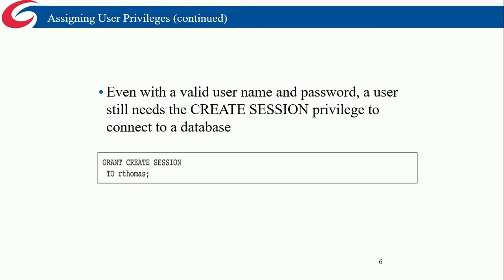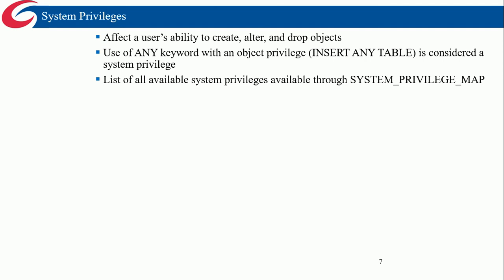Even with a valid username and password, you still need the CREATE SESSION privilege to connect to the database. This is a common mistake students make — they create the user account but can't log in. That's because you need permission to create a session. Creating a user account is really a two-step process: create the user account with a password, then GRANT CREATE SESSION to that user. It's an important step you don't want to forget.